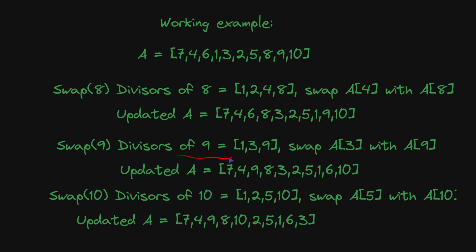The divisors of 9 are 1, 3, 9. Swap a3 with a9 brings 9 at index 3 and 6 at index 9. For swap 10, the divisors are 1, 2, 5, and 10. We swap a5 with a10.